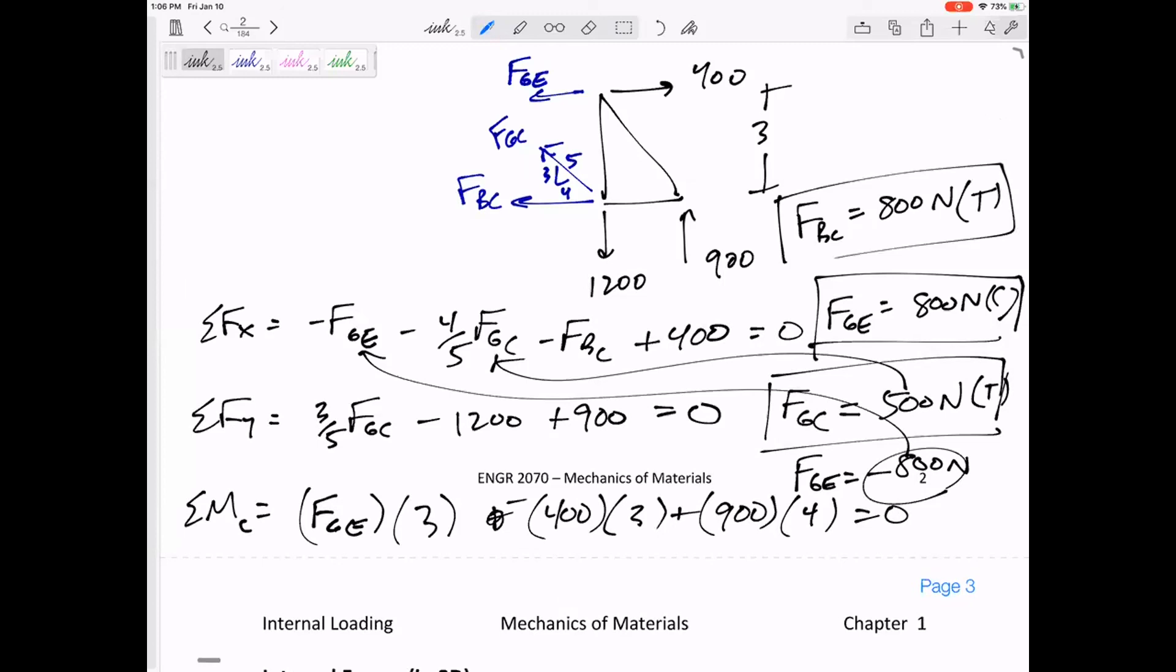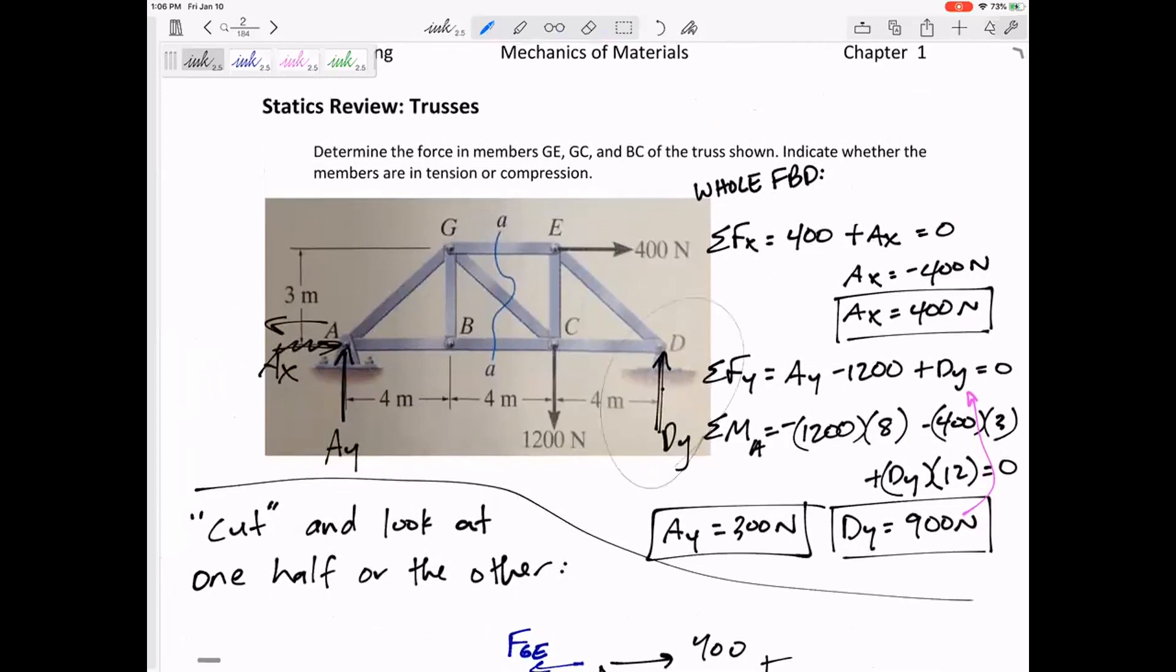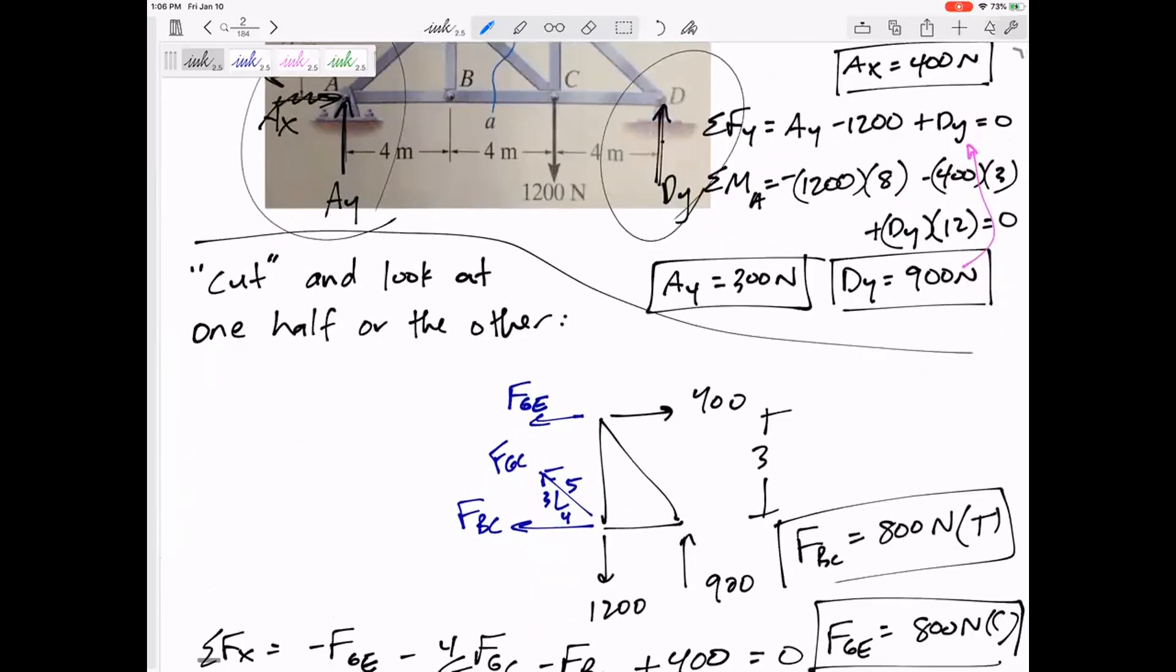But we're not doing that. That's not part of this class. That's just kind of settings—that's a review of a couple of things. A review of being able to solve for Dy and Ax, Ay. First of all, you got to know I need to put an Ax and Ay. You got to know I only need a Dy perpendicular to the ground because there's a roller there. You got to be able to solve for those pretty quickly because we're moving on to more important things.